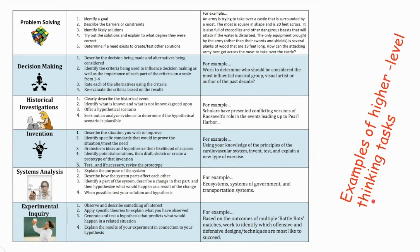Other examples of higher-level thinking tasks can be found in the work of Robert Marzano, who offered six different types of tasks that engage students in cognitive rigor. Problem-solving tasks follow these steps: identifying a goal, describing the barriers or constraints, identifying likely solutions, trying out different solutions and explaining to what degree they were successful, and determining if a need exists to create or test another solution. We also have decision-making tasks, historical investigations, and tasks asking students to engage in the process of invention — describing situations they wish to improve, identifying standards to meet the need, brainstorming ideas, hypothesizing each idea's likelihood of success, identifying potential solutions, drafting or creating a prototype, and testing and revising it. Students can also be asked to engage in systems analysis as well as experimental inquiry.